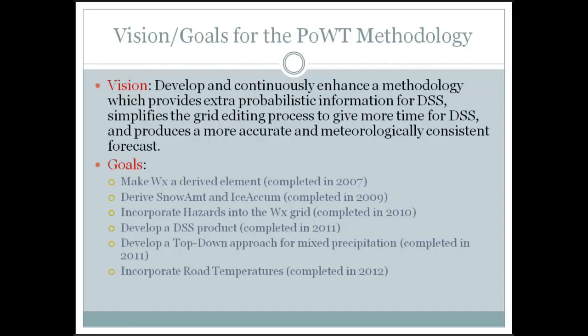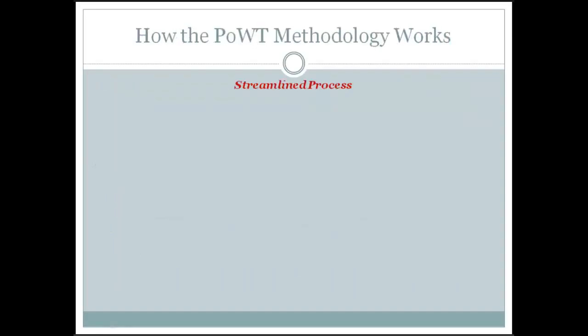Last year, road temperatures were incorporated because their impact can affect precipitation types — whether or not you get ice on the roads. Something still in development is incorporating severe weather probabilities into the weather grid, though that may take a while since we're now on AWIPS 2 at La Crosse.